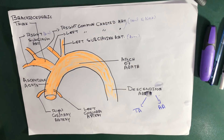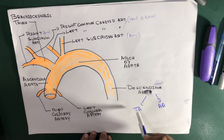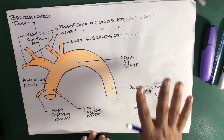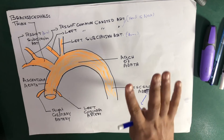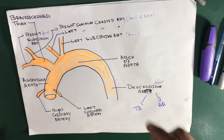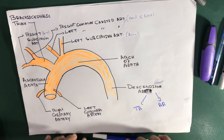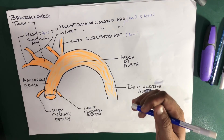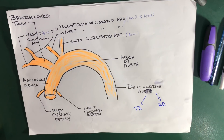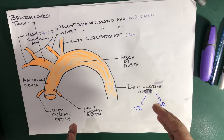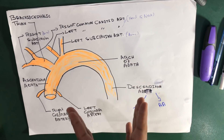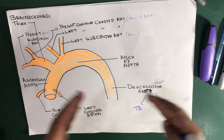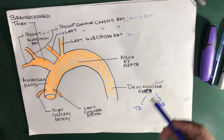The descending thoracic aorta begins at the lower border of the fourth thoracic vertebra and ends at the lower border of the twelfth thoracic vertebra, passing through the diaphragm. The abdominal aorta then continues and, at its terminal branches, divides into the right and left common iliac arteries at the level of the navel, which further supply the pelvis and the lower limbs.